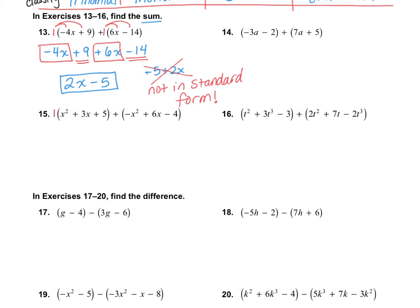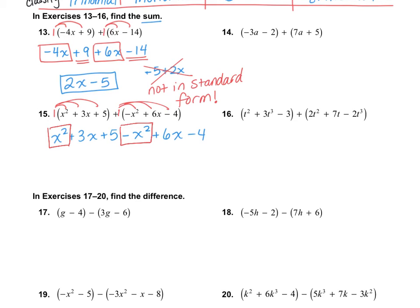On number 15, we do the same thing — rewrite without parentheses by multiplying in the one, then combine like terms in standard form. A positive x squared and a negative x squared cancel out. Positive 3x and positive 6x give 9x. And 5 minus 4 gives plus 1. So the answer for number 15 is 9x plus 1.